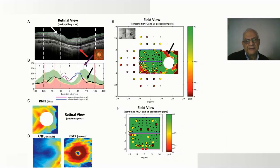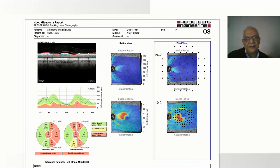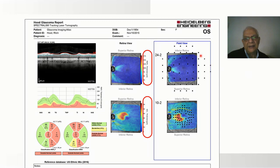Here is another example using the Heidelberg system, which similarly shows the thickness of the nerve fiber layer and of the ganglion cells in relation to both the 24-degree and 10-degree visual field.